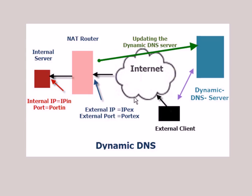Now let's talk about dynamic DNS as applied to small business and home networks — how it's used and how it actually works. In this diagram, we have a machine with an IP address and port running a service — maybe a web server or a security camera service. We also have a NAT router, which protects this machine from the internet and has an external IP address and external port.